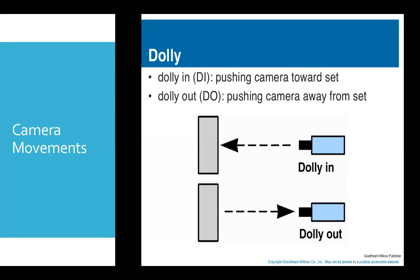Dolly is a kind of platform that has wheels and is usually used to carry heavy cameras used in film or television. In other words, it's a kind of trolley that carries camera.